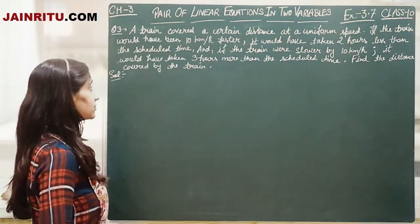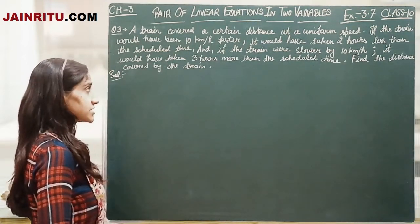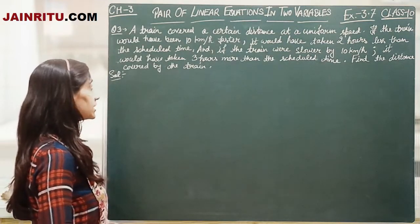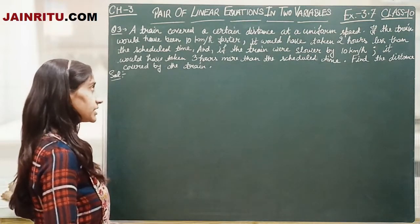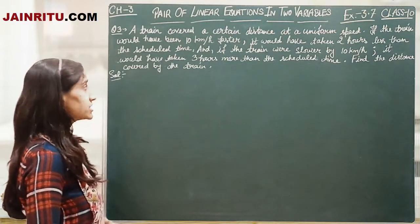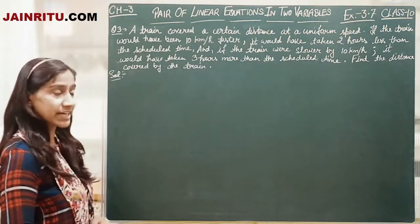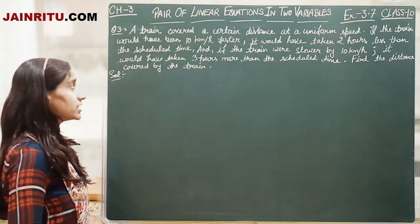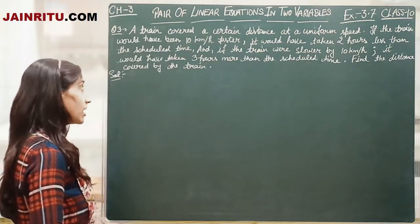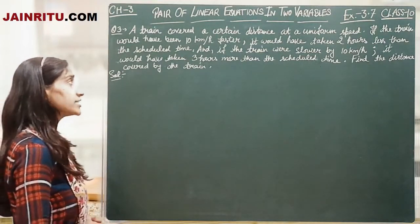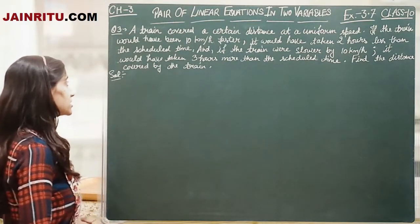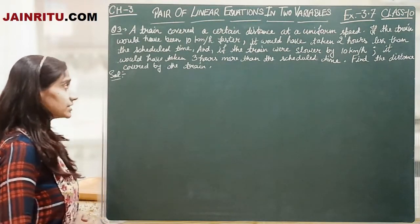A train covered a certain distance at a uniform speed. If the train would have been 10 km per hour faster, it would have taken 2 hours less than the scheduled time. If the train was slower by 10 km per hour, it would have taken 3 hours more than the scheduled time. Find the distance covered by the train.